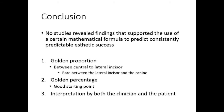Conclusion: No studies revealed findings that supported the use of these three mathematical formulas to consistently predict aesthetic success within the limitations of this review. While the golden proportion seems to be present between the central to lateral incisor in some cases, it is rare between the lateral incisor and the canine. The golden percentage may be a good starting point if the ratio is adjusted to account for the patient's ethnic background. Overall, generalized aesthetic ideas do not appear to fit within a mathematical formula and are open to interpretation by both the clinician and the patient.